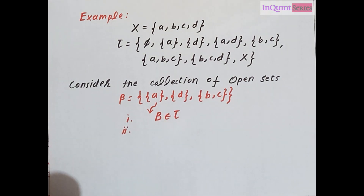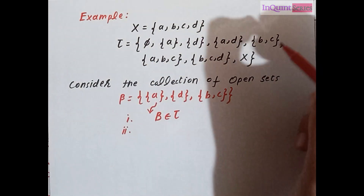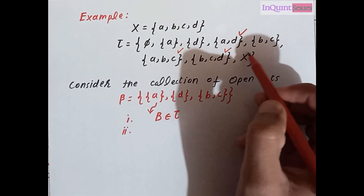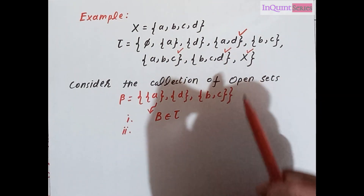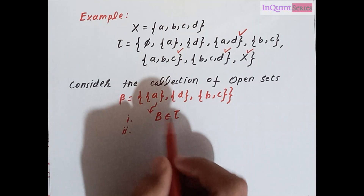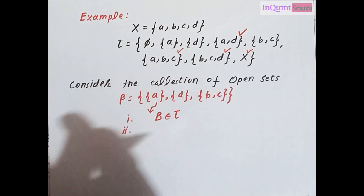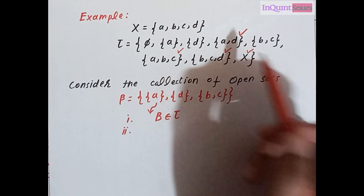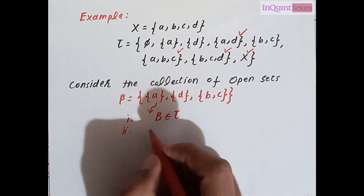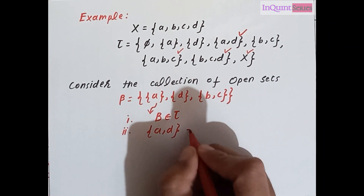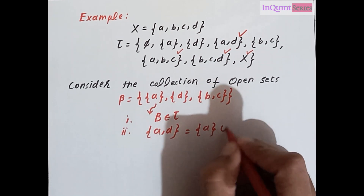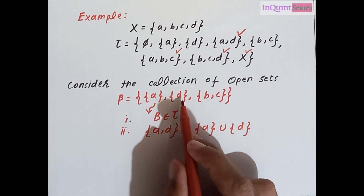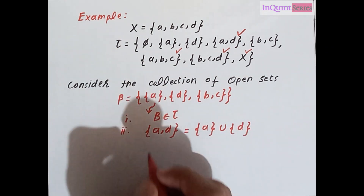We check that the other members of tau — namely {a, d}, {a, b, c}, {b, c, d}, and x — can be written as unions or finite intersections of elements of beta. For instance, {a, d} can be written as the union of {a} and {d}, and both {a} and {d} belong to the collection beta.